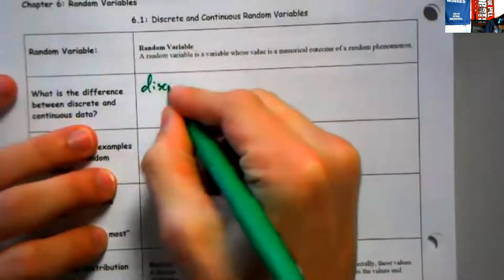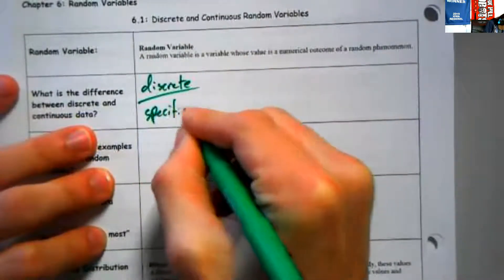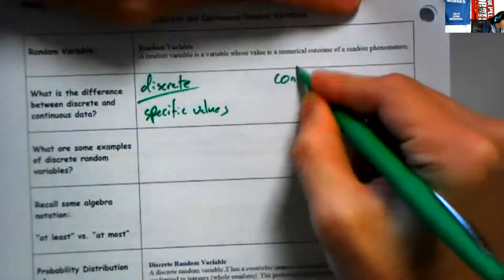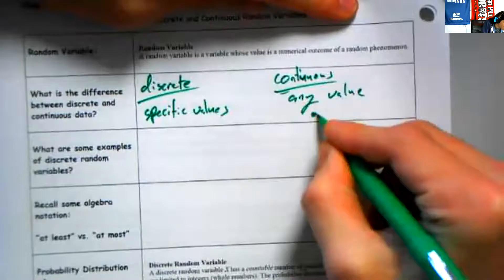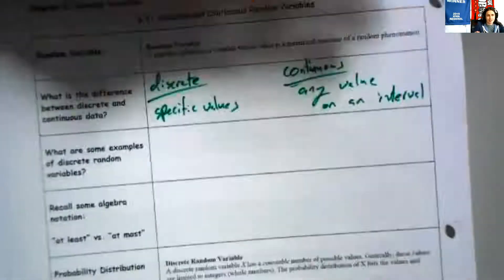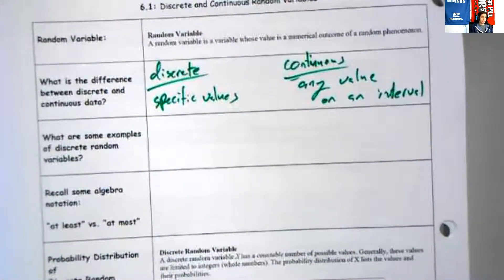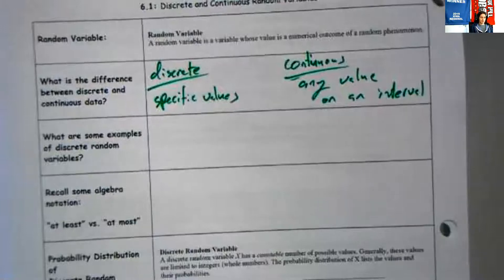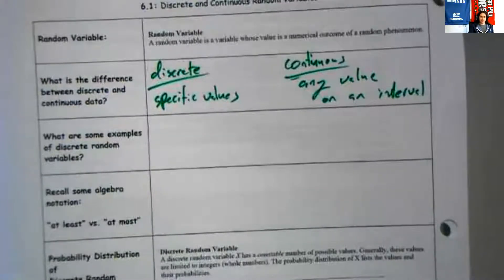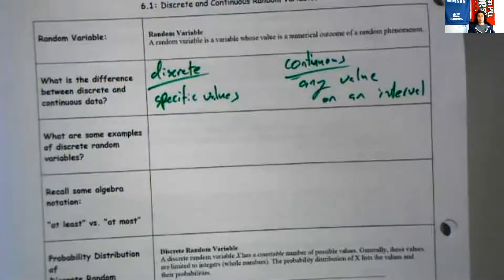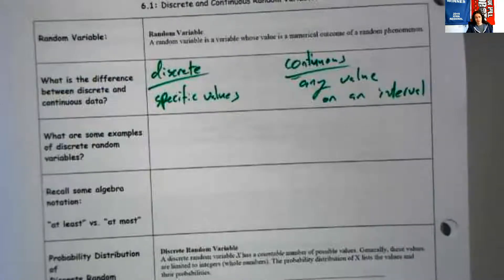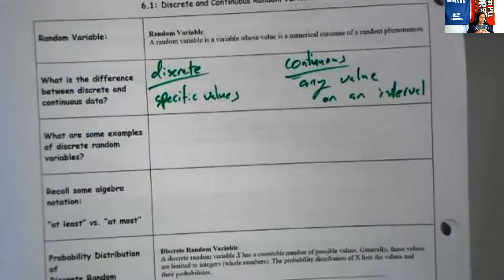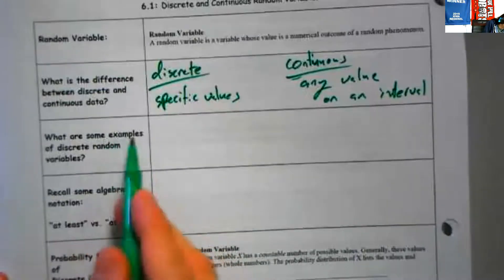We've got some refreshers on vocabulary terms from old units with discrete and continuous data. You will hopefully remember that discrete takes specific values, whereas continuous takes any value on an interval. Why is that important? The type of variable is going to dictate the type of tools we use.